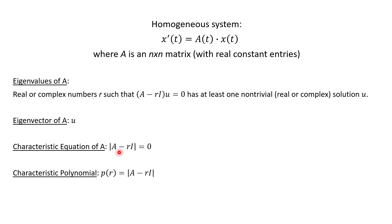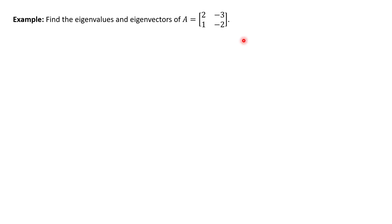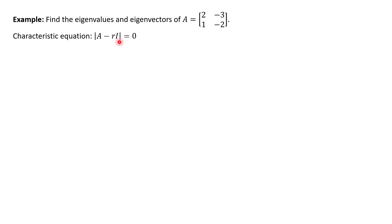The difference is maybe the notation — we're using r instead of lambda. So let's take a look at this first example: find the eigenvalues and the eigenvectors of this two by two matrix. We're going to start with our characteristic equation, A minus rI, find that determinant, and set it equal to zero. This is just a two by two, so the determinant is going to be pretty easy.